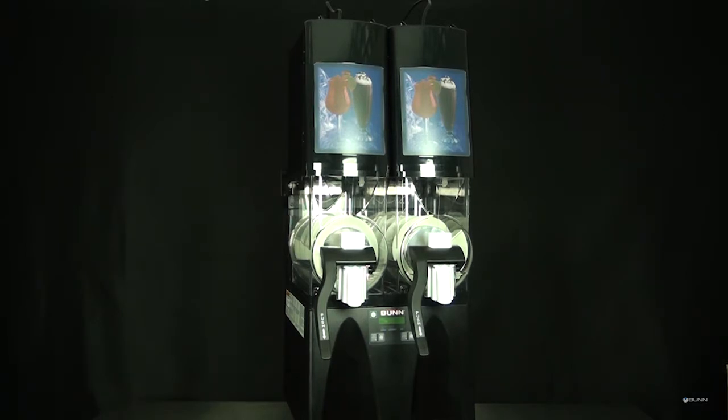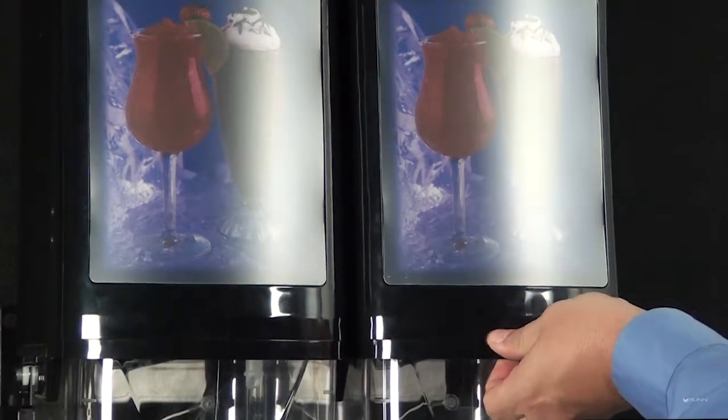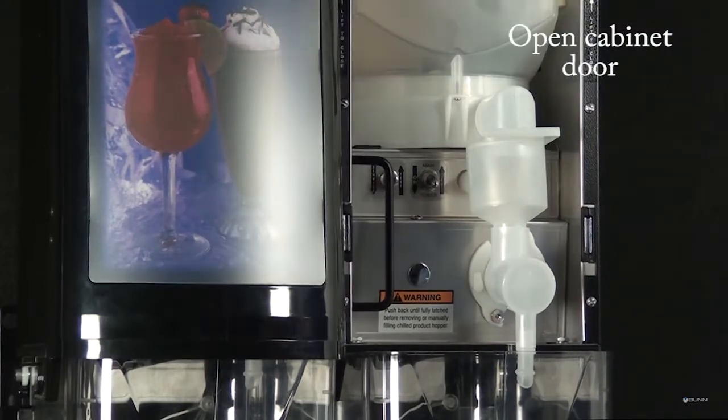This video will demonstrate the process of installing the preventive maintenance kit on the Ultra 2HB with PAF. Open the cabinet door and allow the support arms to lock in place.